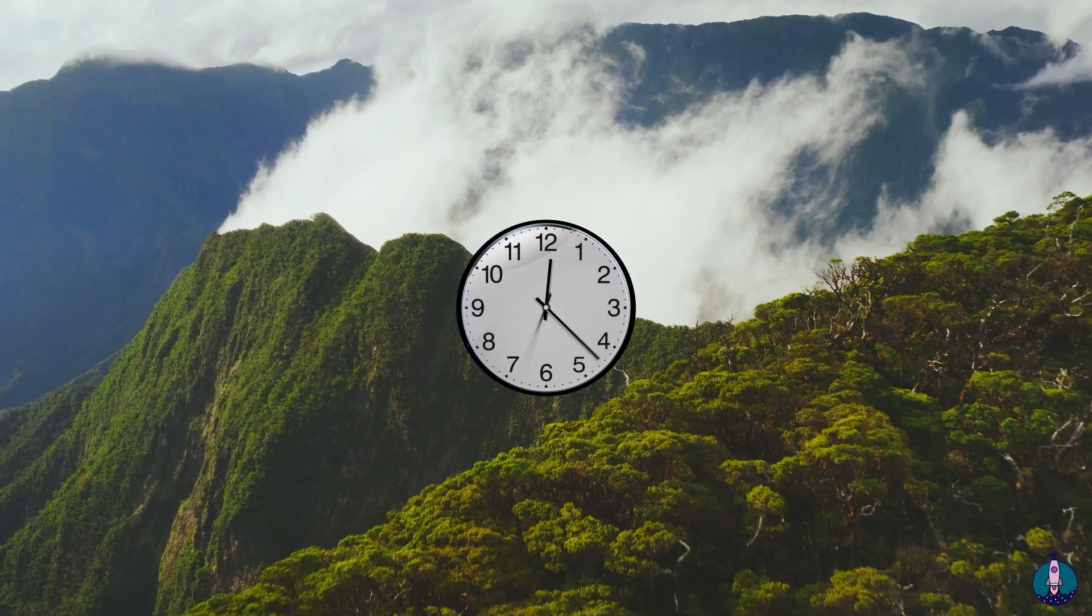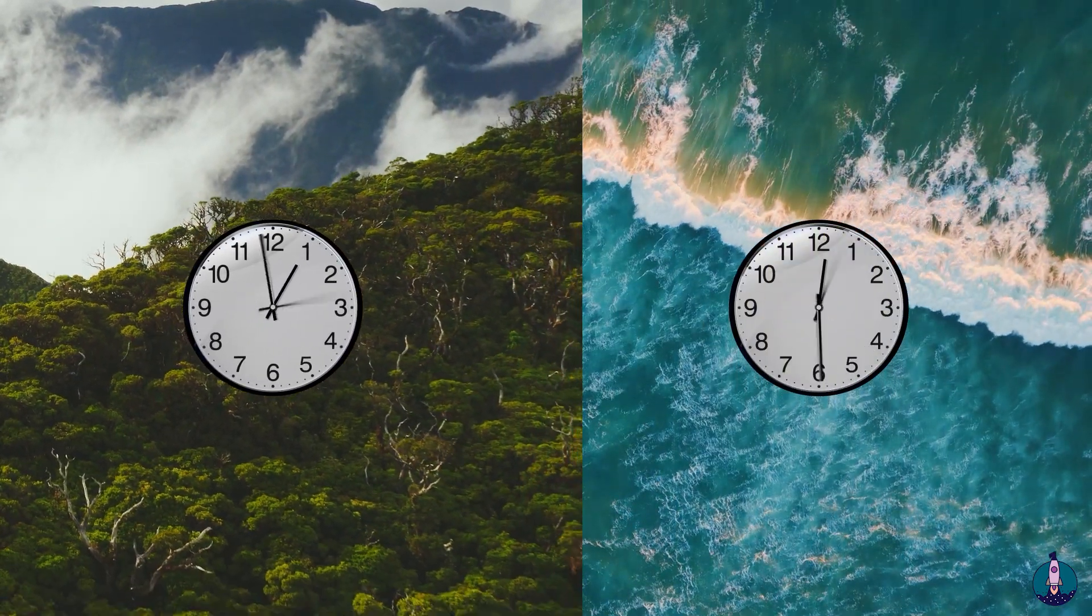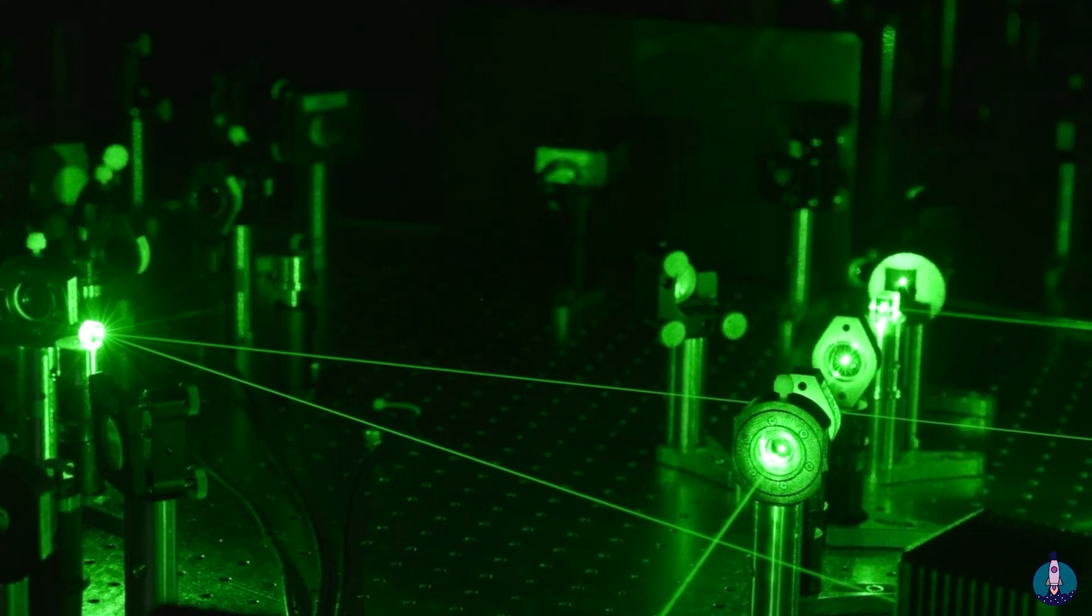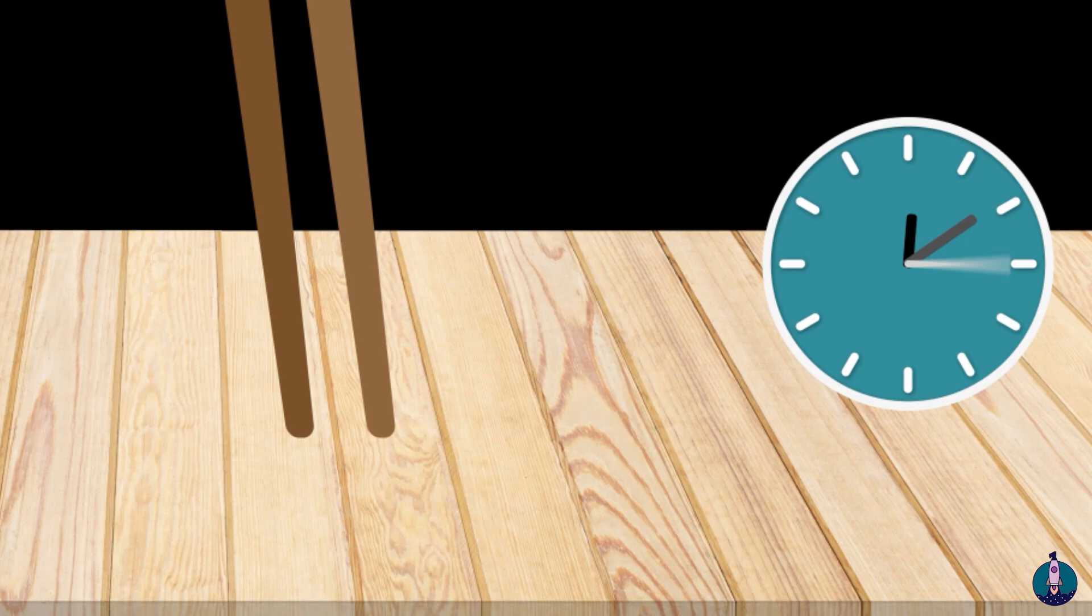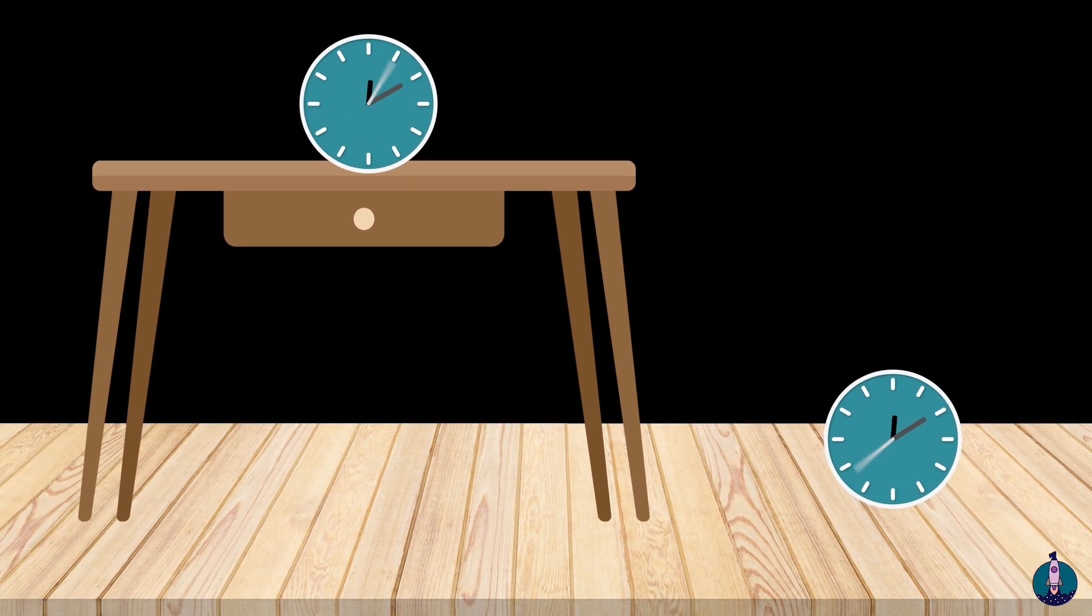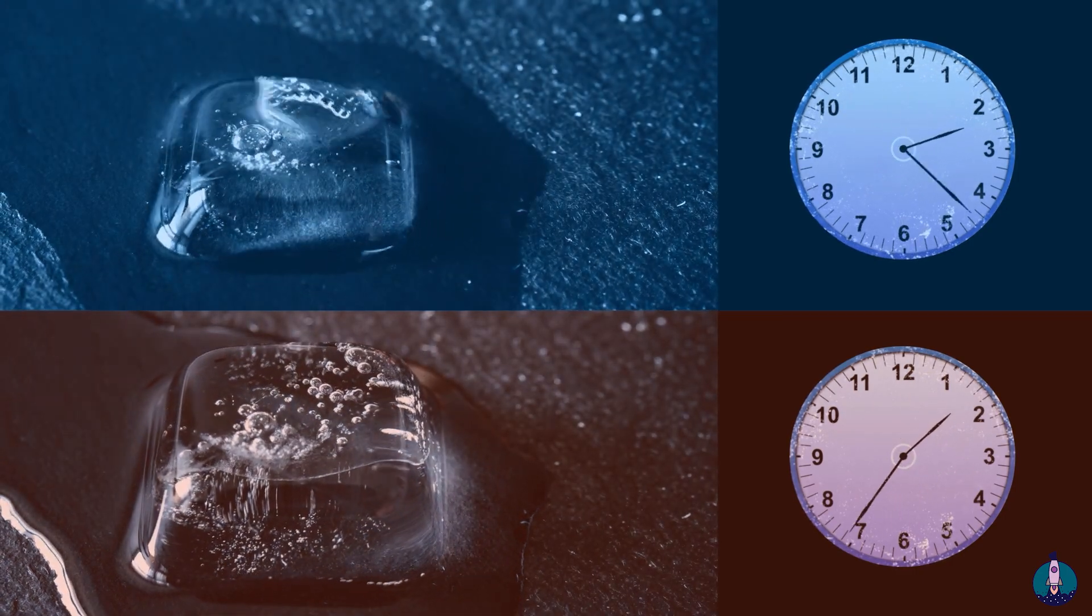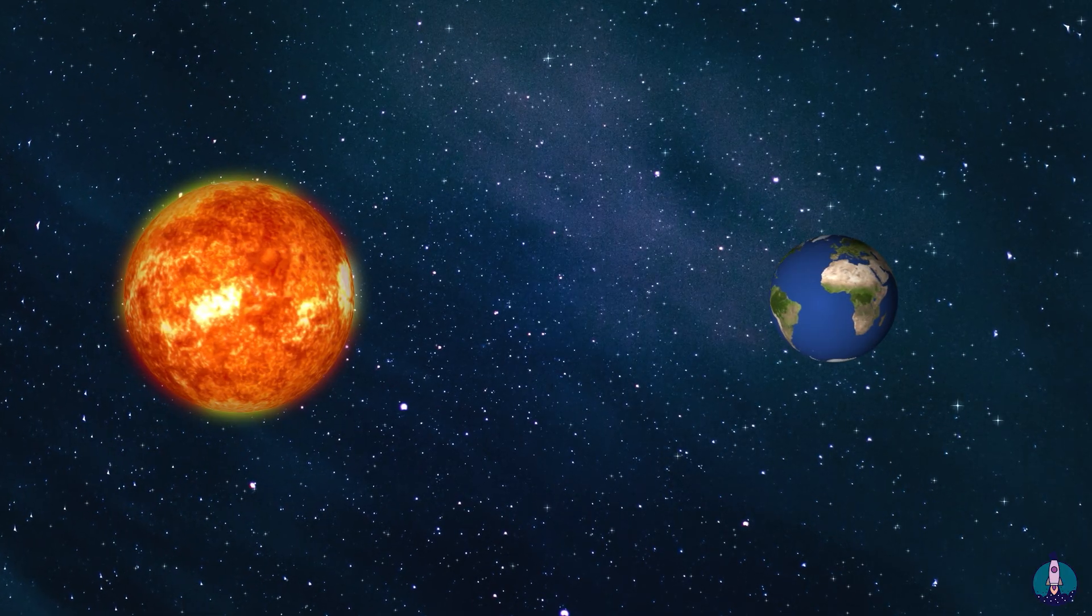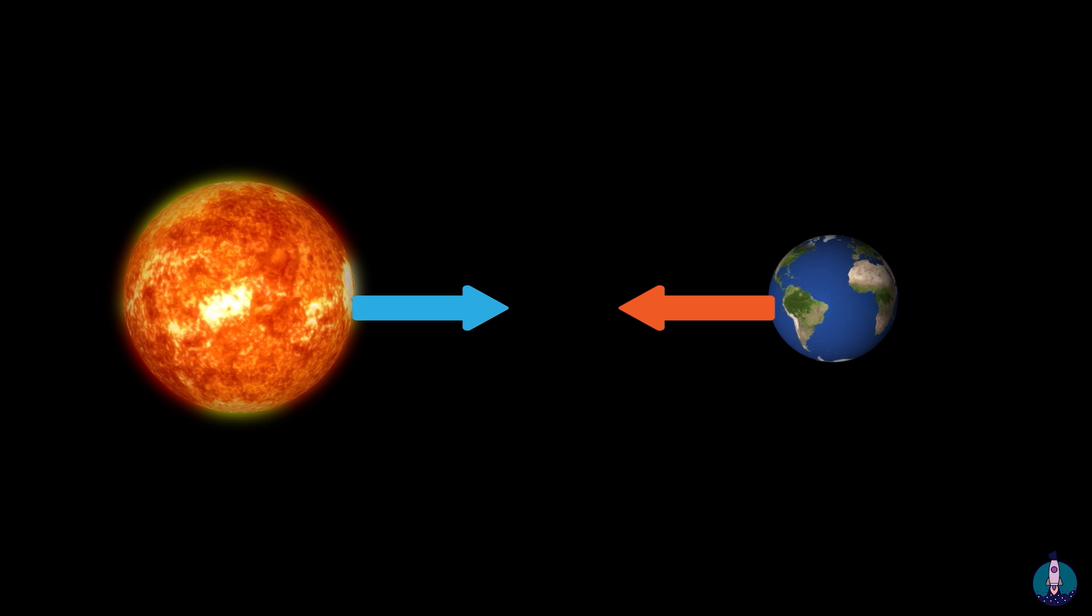Time actually passes faster in the mountains than it does at sea level. The difference is tiny, but with precise instruments, we can measure it. Even a clock on the floor runs a little slower than one on a table. But it's not just clocks that slow down. Lower down, all processes are slower.